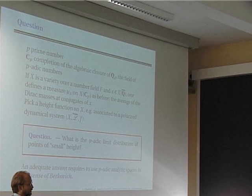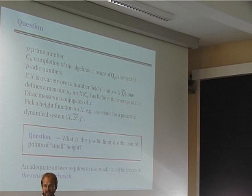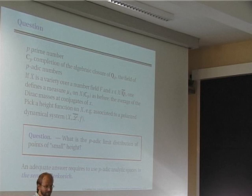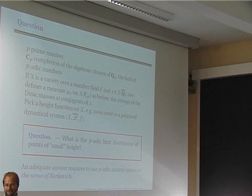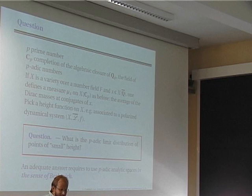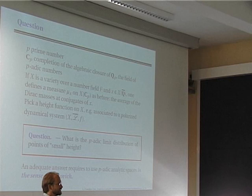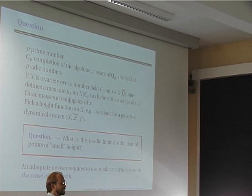You have a topological space which is a ℂ_p-analytic variety, you can use measures on that space, and you have discrete measures attached to algebraic points by averaging the Dirac masses at all conjugates. You take a height function on X given by a polarized dynamical system. The measures are real-valued measures — this is real measure theory in any sense. And the question is: what is the p-adic limit distribution on this space? How do the measures behave? To answer that question, you have to introduce Berkovich spaces.